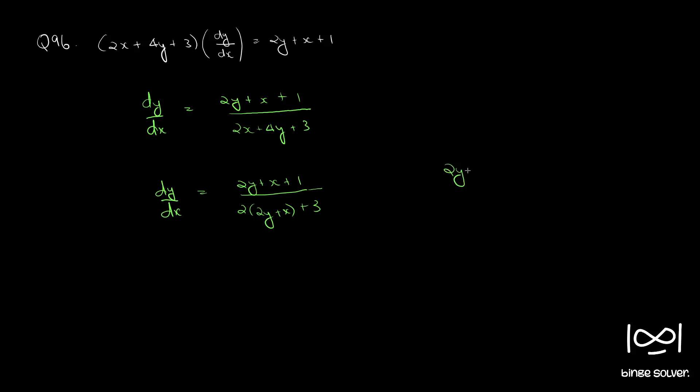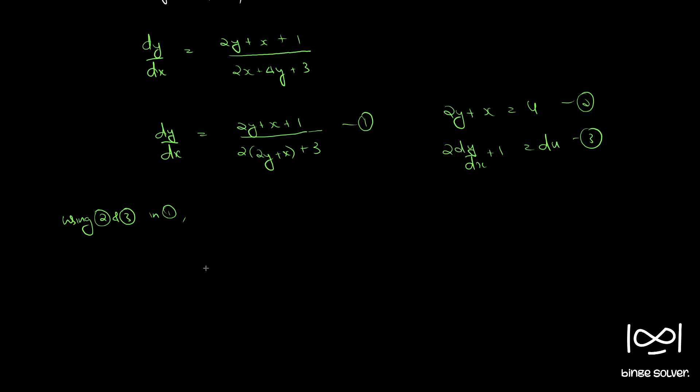So let this be equations 1, 2, 3. Using 2 and 3 in 1 we get 1 by 2 dy by dx is 1 by 2 into du minus 1 equal to u plus 1.